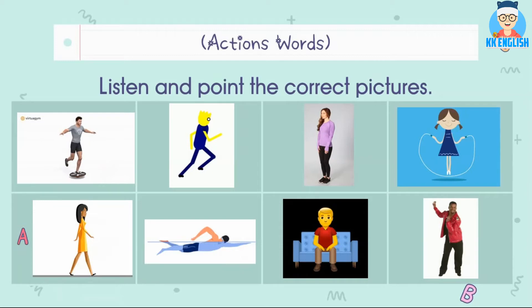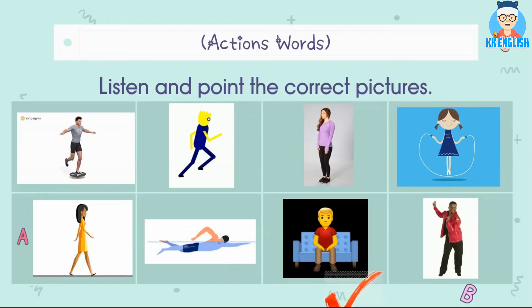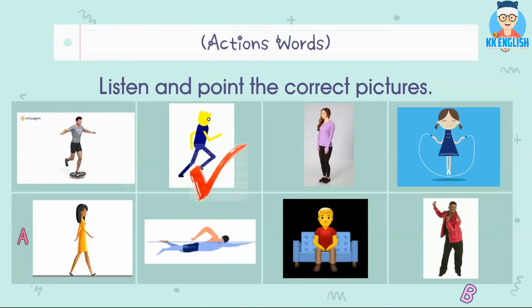Number 4: I can stand on one leg. Number 5: I can walk. Number 6: I can skip. Seven: I can sit. The last one is: I can run. Well done!